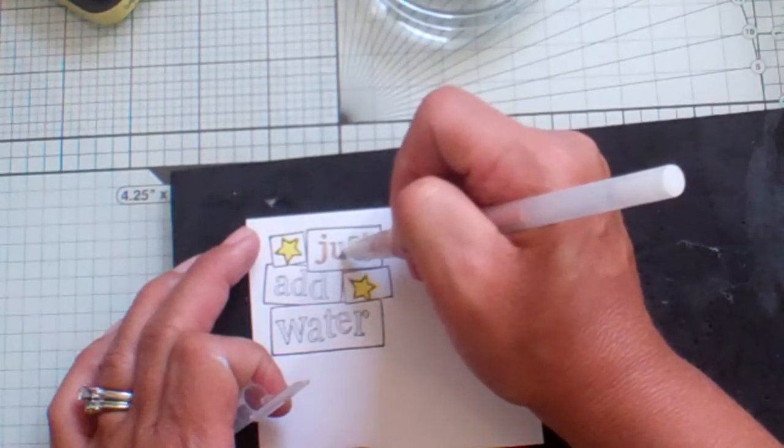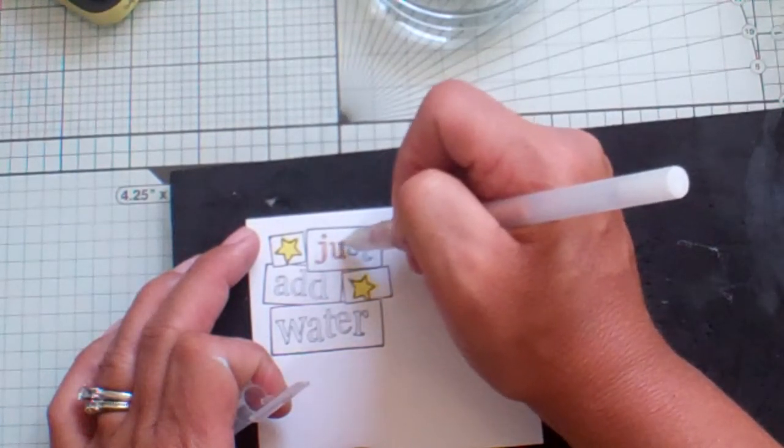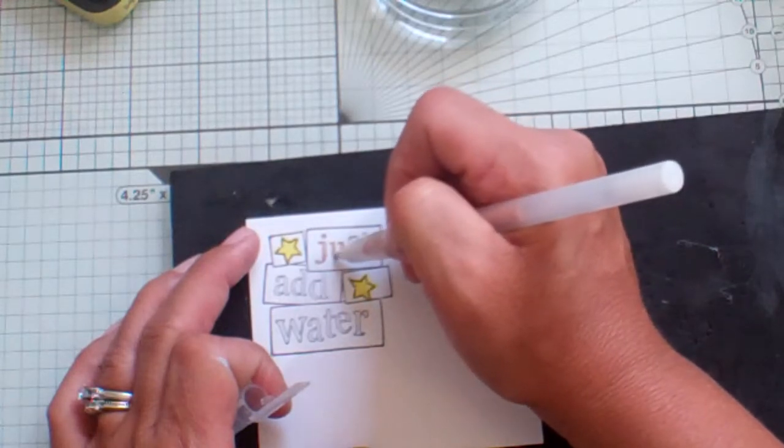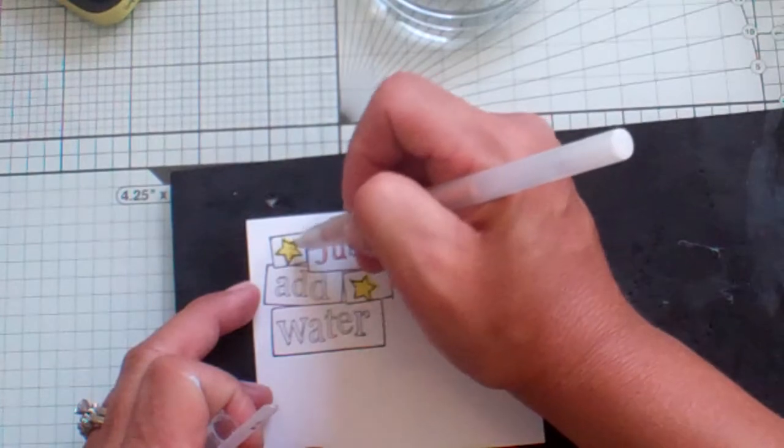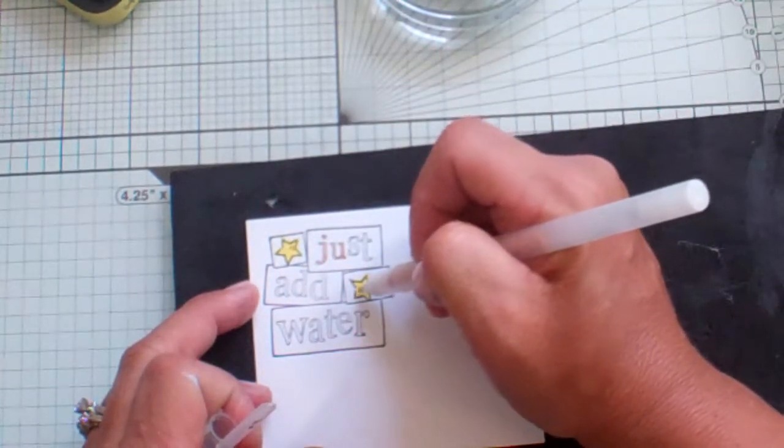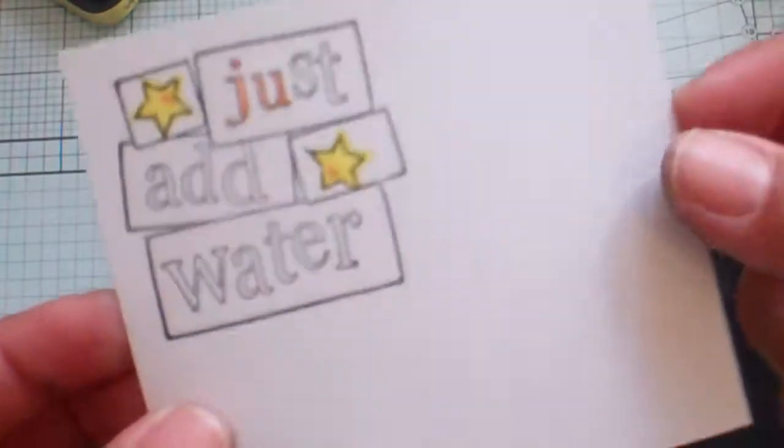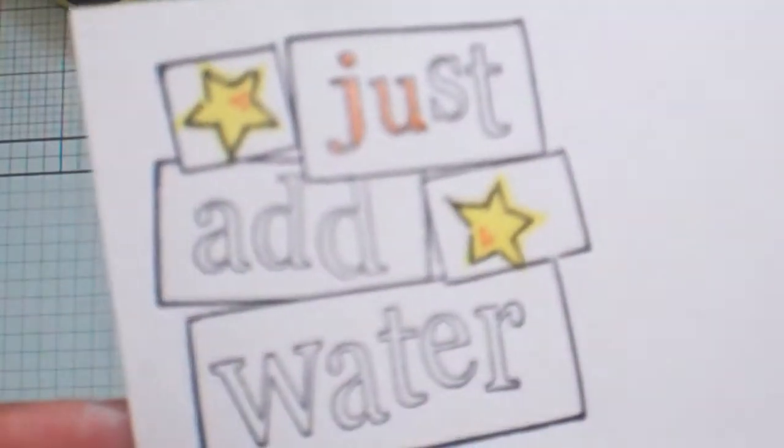any other markers you might have, just to fill in the words. If I wanted to, I could add some doodles here, which I didn't do, but I might go ahead and add that. So there you have it - that's how I customized my 'just add water' stamp.